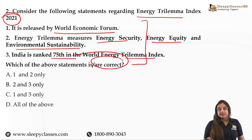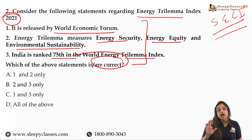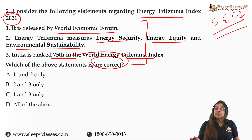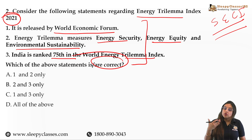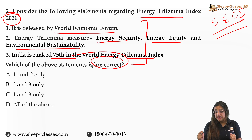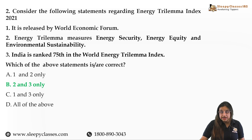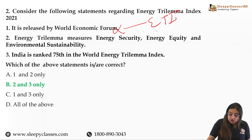The Energy Trilemma Index is very important — there is also the State Energy and Climate Index, and we have 4 indices by name including this one. The answer to this question is statements 2 and 3, because the World Economic Forum did not release this index — the World Energy Council released it. The World Economic Forum's index is called the Energy Transition Index.